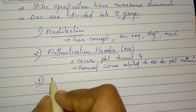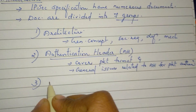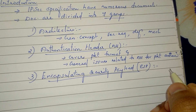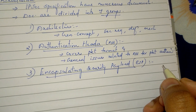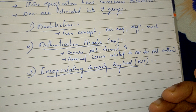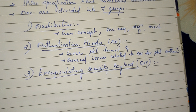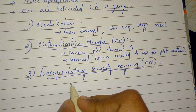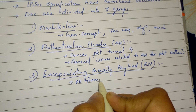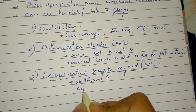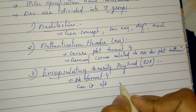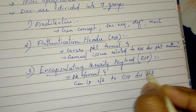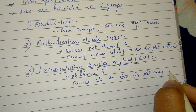The third group is Encapsulating Security Payload. In ESP, we specify the packet format, packet encryption, and general issues related to ESP for packets. We also specify the encryption and optionally authentication.